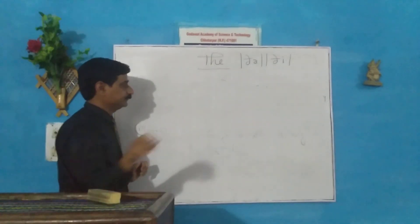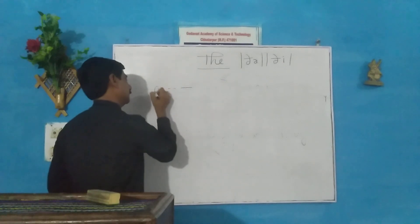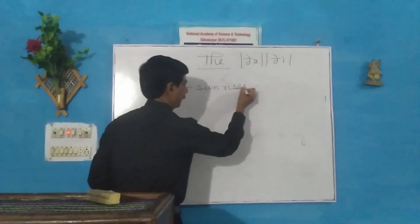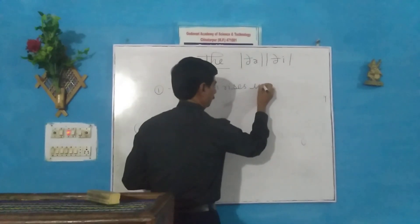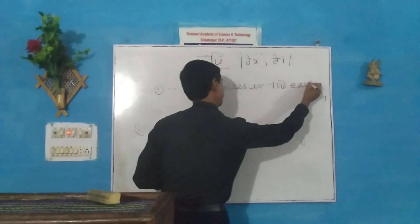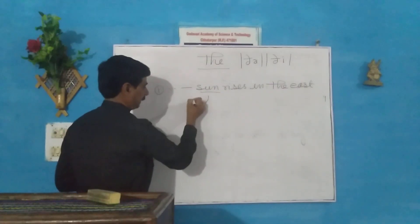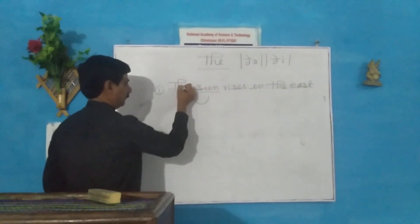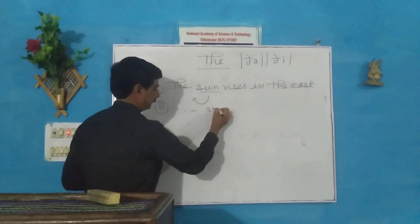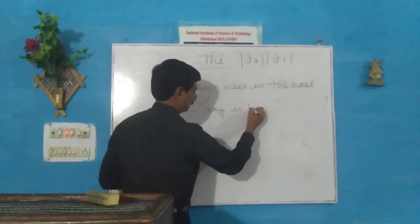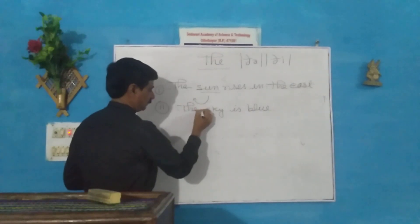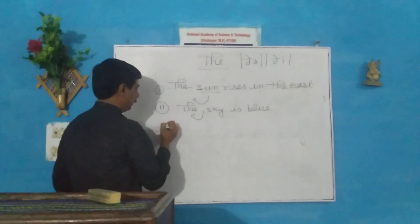Example: The sun rises in the east. You see here, sun is a unique thing, that's why the will come. Number 2: The sky is blue. Sky is unique.